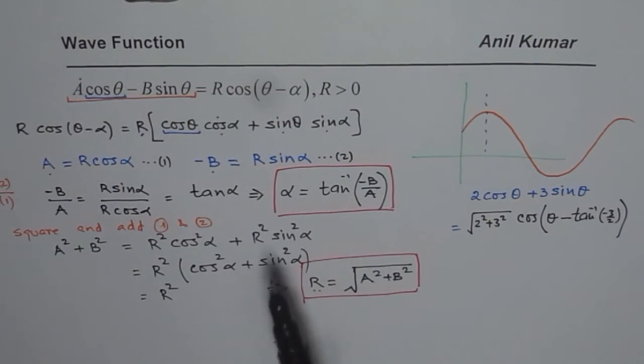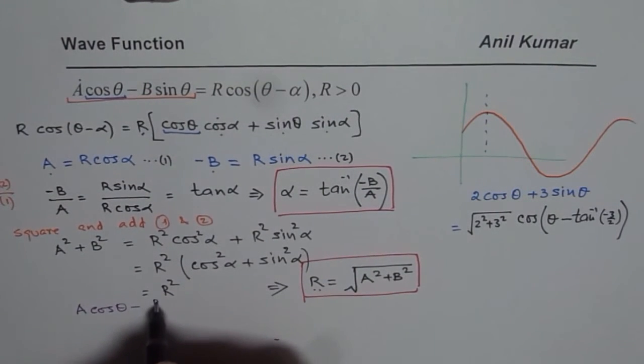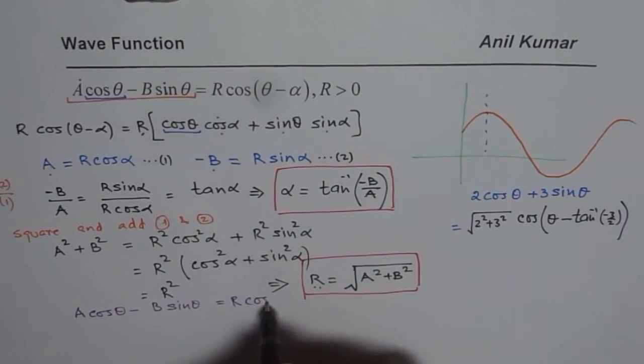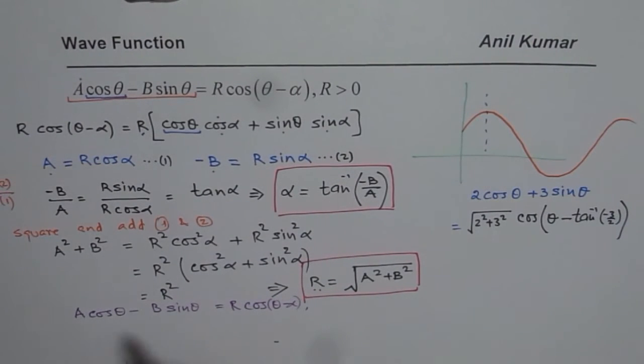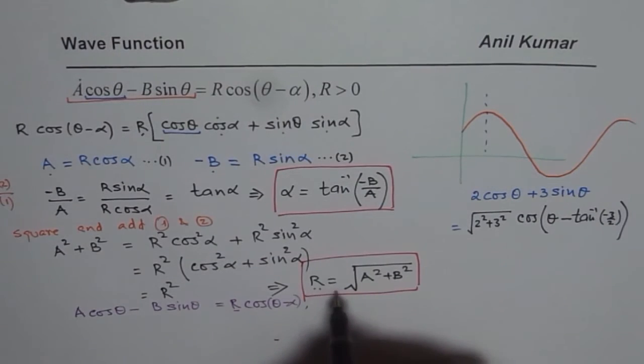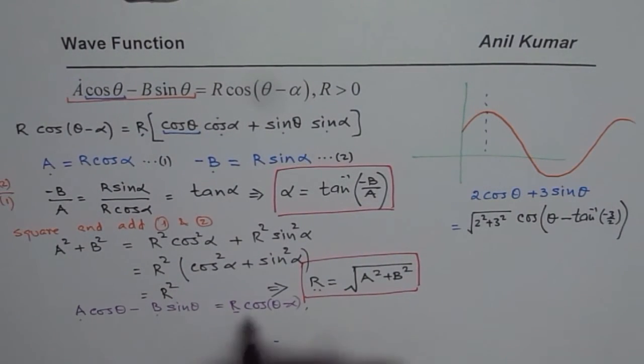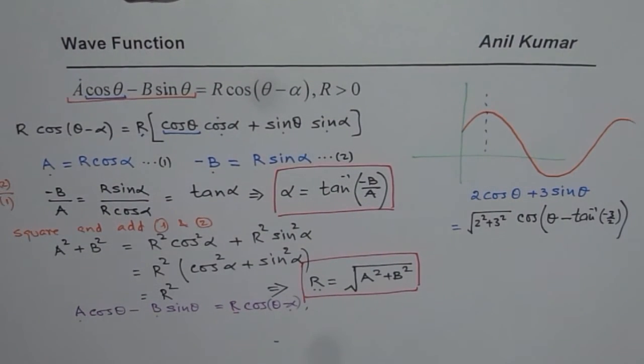Now from here onwards I think you got the base. What we can summarize here is that A cos θ minus B sin θ equals R times cos(θ - α), where R equals square root of A² plus B² and α is tan inverse of minus B by A.